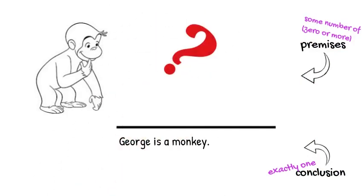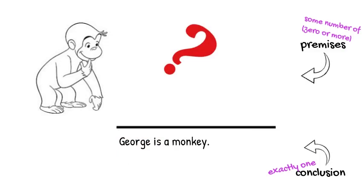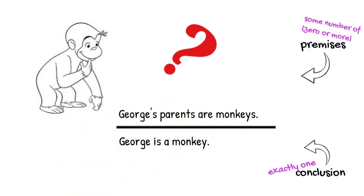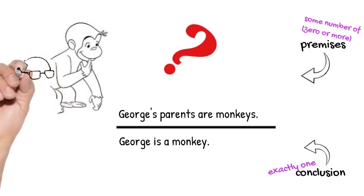But if we don't know anything about George, and we don't know anything about monkeys, then we'll have a hard time drawing this conclusion. And so a better argument might start with another assumption about George. For example, that George's parents are monkeys. And this assumption does seem to be the right kind of thing to convince us that George is a monkey. It's enough to persuade me at any rate.